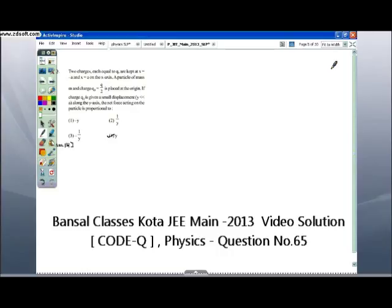Next question reads: two charges, each equal to Q, are kept at X equals minus A and X equals A on the X axis. A particle of mass M and charge Q0 equals Q by 2 is placed at the origin. If the charge Q0 is given a small displacement Y, much less than A, along the Y axis, the net force acting on the particle is proportional to...